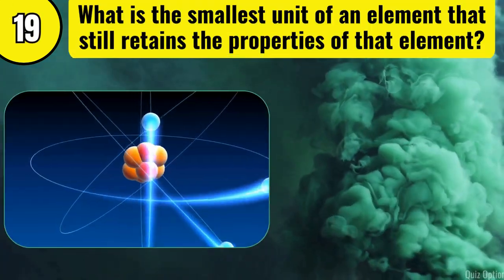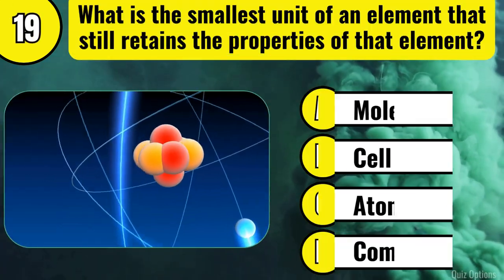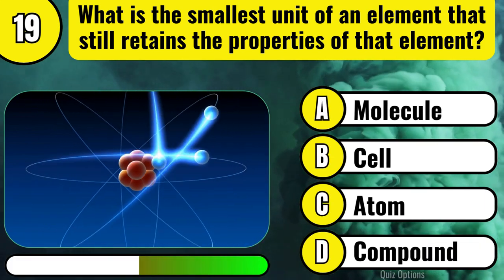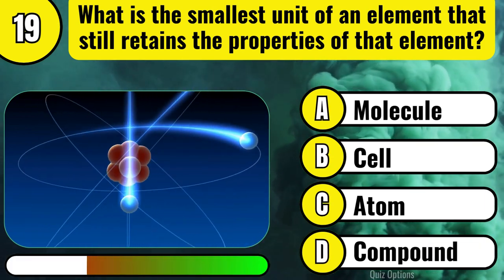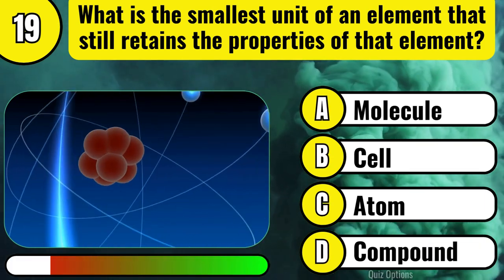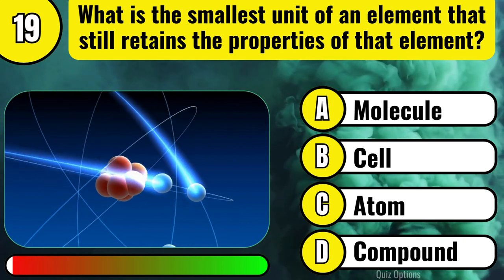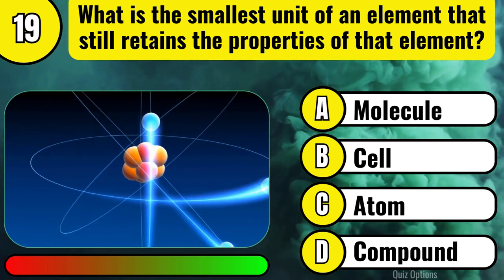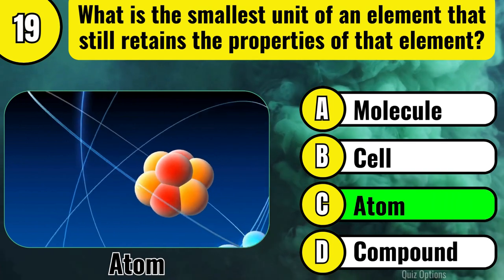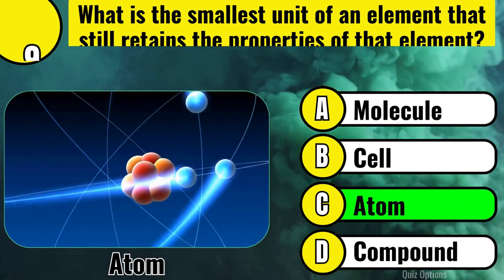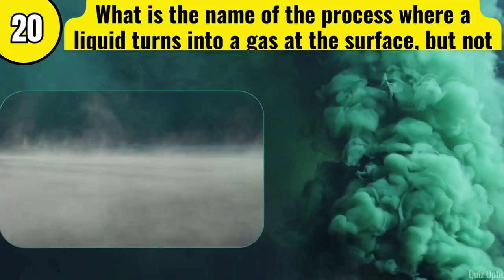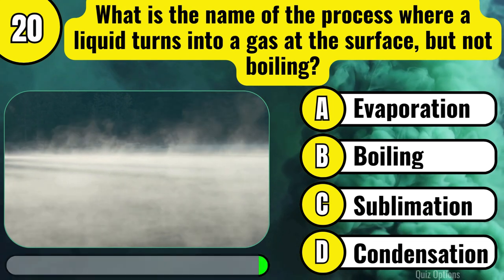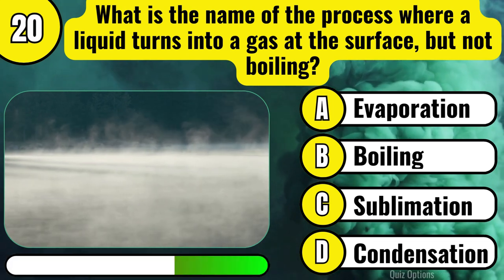What is the smallest unit of an element that still retains the properties of that element? What is the name of the process where a liquid turns into a gas at the surface, but not boiling?